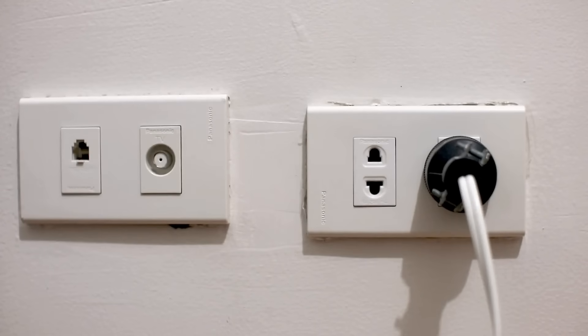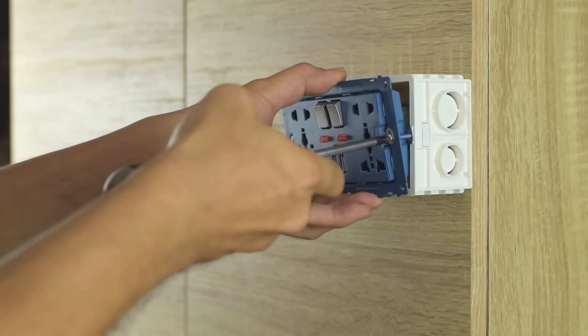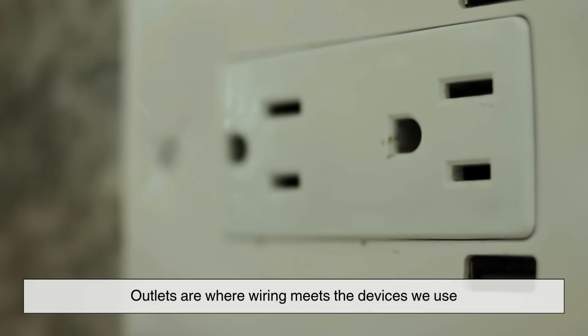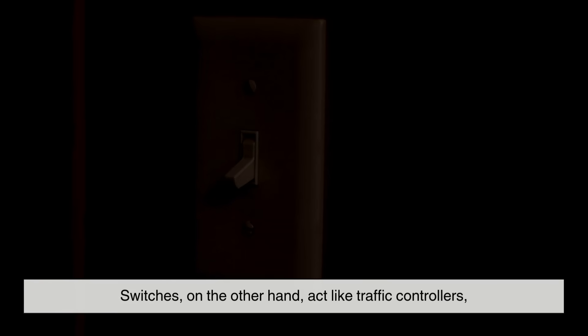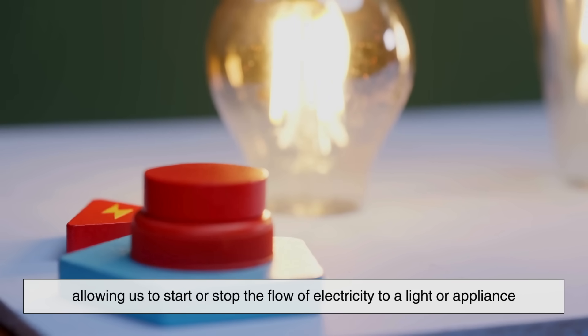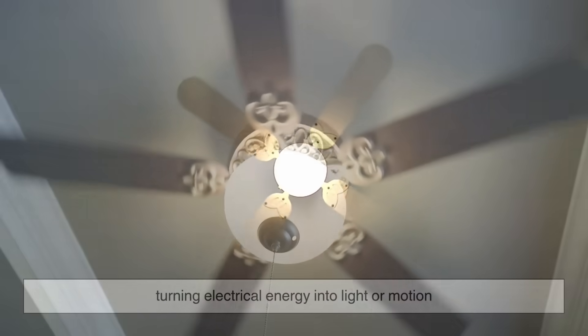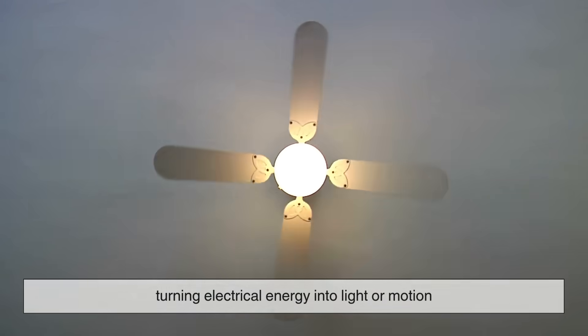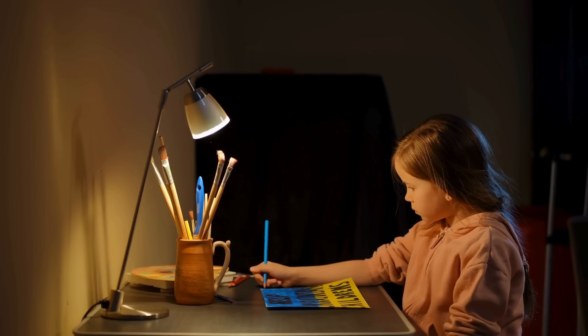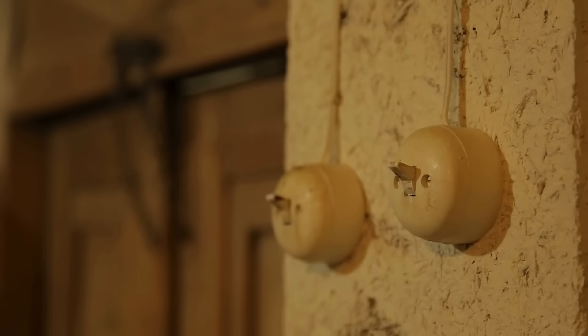When you look at an outlet on the wall, it seems so simple. But behind that little plastic cover is a carefully connected system. Outlets are where wiring meets the devices we use. Switches, on the other hand, act like traffic controllers, allowing us to start or stop the flow of electricity to a light or appliance. Fixtures, like lights and fans, are the end users, turning electrical energy into light or motion. The beauty of it all is how seamlessly it works together. The system is designed so anyone, even a child, can safely flip a switch without worrying about the complexity behind it.